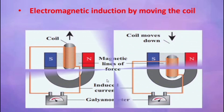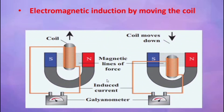The third experiment is electromagnetic induction by moving the coil. In the previous case, we moved the magnet; here, we move the coil. The magnet is stationary at a fixed position, and the coil is moved in and out. There is a deflection when we move the coil inside or outside the fixed magnet, meaning EMF is produced.